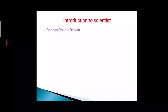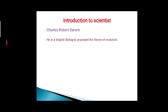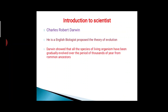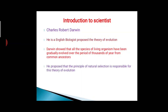Here we are going to see the introduction to the scientist Charles Robert Darwin. He is an English biologist who proposed the theory of evolution. Darwin showed that all species of living organisms have been gradually evolved over a period of thousands of years from common ancestors. He proposed that the principle of natural selection is responsible for this theory of evolution.